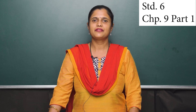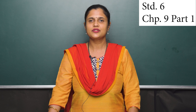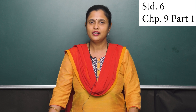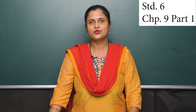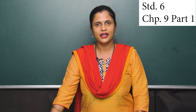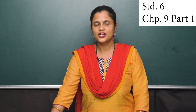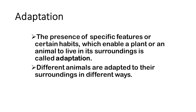Variety of organisms have certain features which help them live in the surroundings in which they are normally found. The specific features which enable a plant or an animal to live in its surrounding is called adaptation. This means that many organisms have developed certain parts of their bodies or certain behaviors which make them stay alive in certain environments. Remember, adaptation does not take place in a short period of time — adaptation in living organisms takes place over thousands of years.